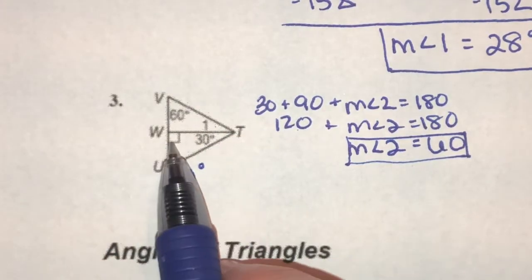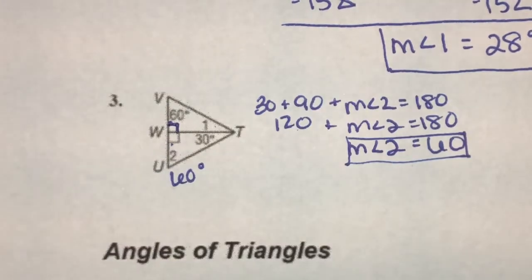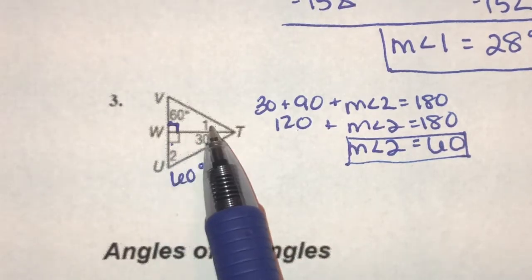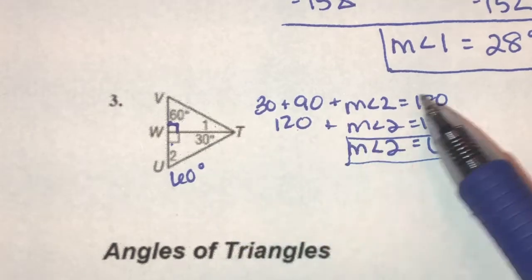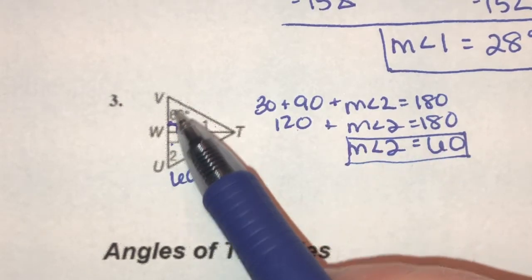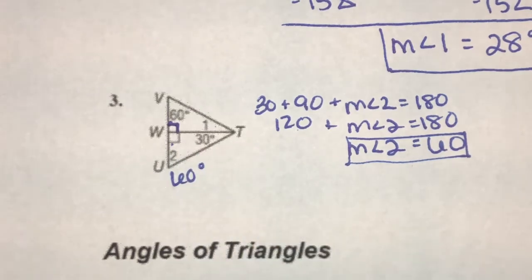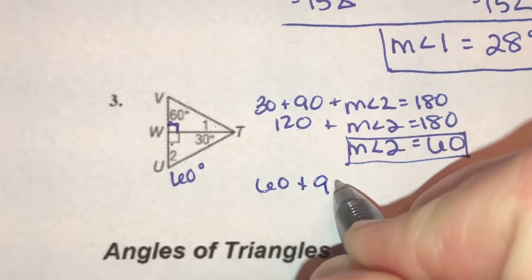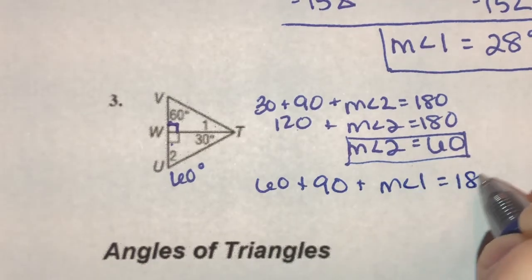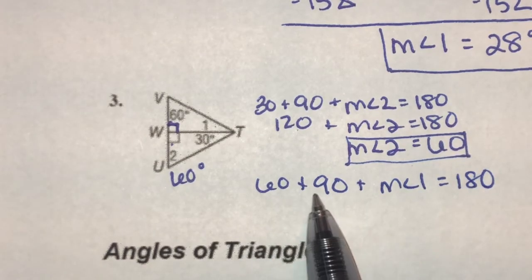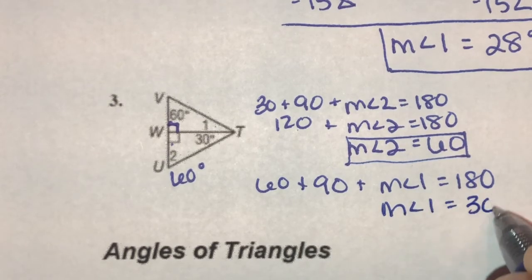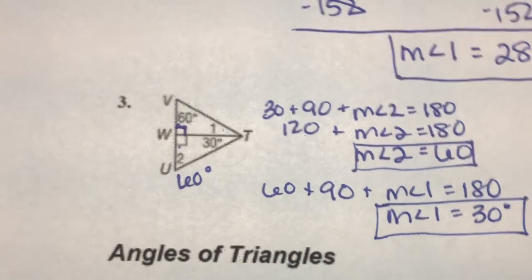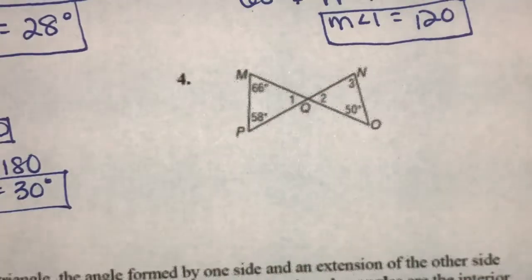Over here, if angle W is 90, this one on the other side has to be 90 as well because they both make up a straight line — they make up a linear pair. So 60 plus 90 plus what adds up to 180? We know this angle is 60, and if this one's 60 and both of these are 90, 60 and 90 is 150. Subtract 150 from both sides and we get 30 degrees. So we just found the measures of angles one and two.